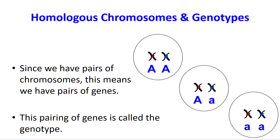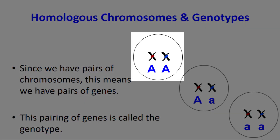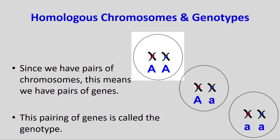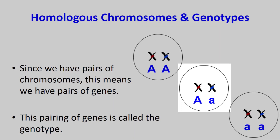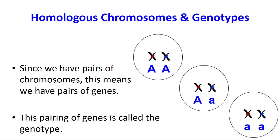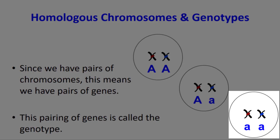You could have gotten both dominant genes from both parents, or one dominant gene and one recessive gene, or two recessive genes from both parents.